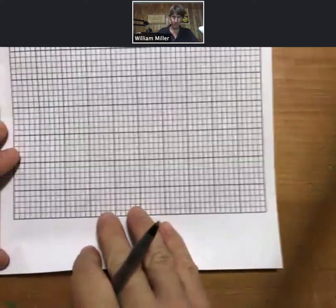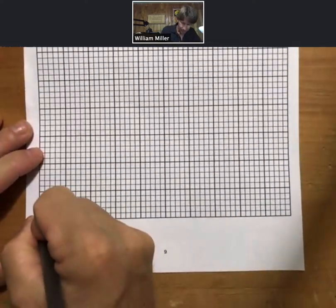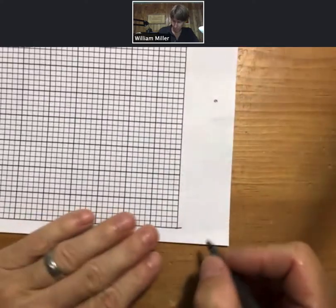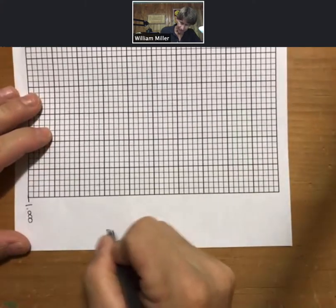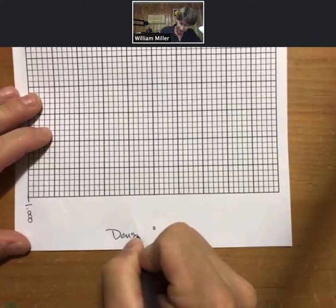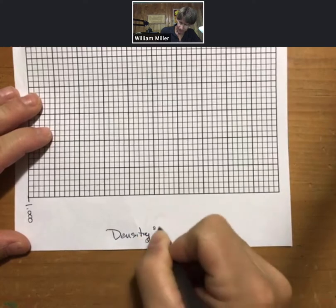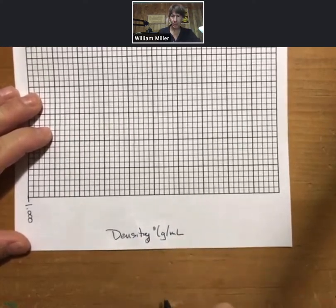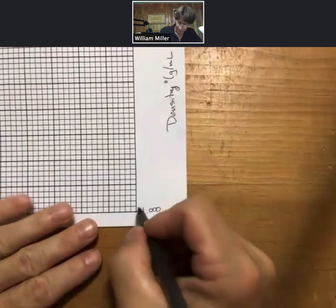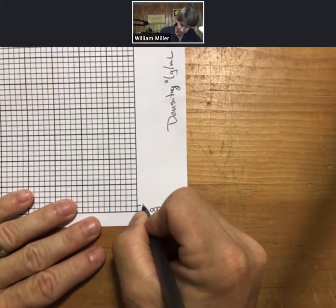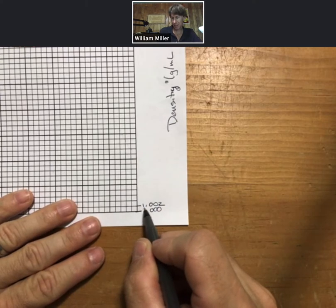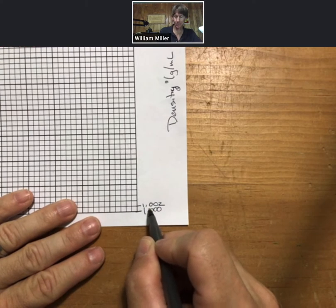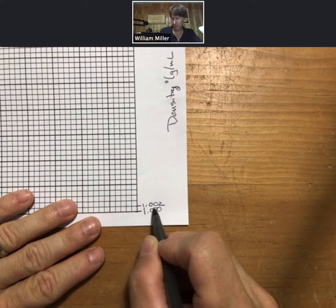So what that looks like on my x-axis is right here will be 1.000. My units and my label on this will be density and grams per milliliter. Now I like to just note 1.002. Note the first box because that tells me how big each box is. Each box is 0.002.